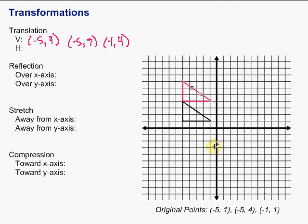So that's a vertical translation of three units up. If we were going down, we would subtract; if we're going up, we add. Now let's look at a horizontal translation of four units to the right. Which of my coordinates deals with moving left and right?